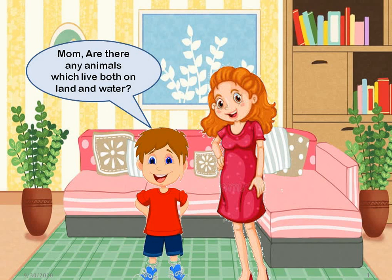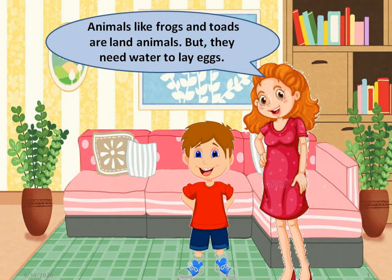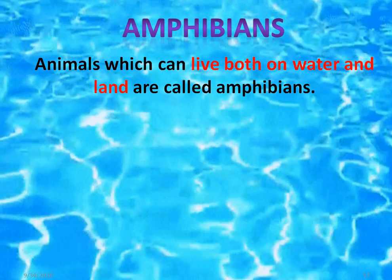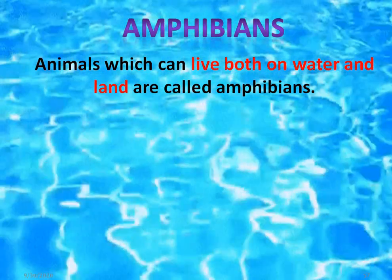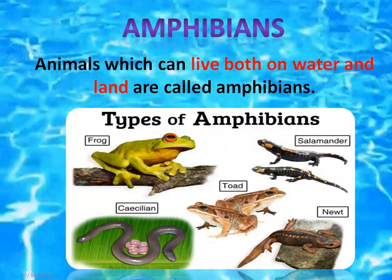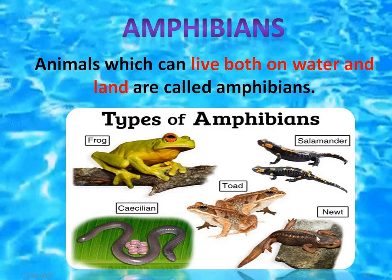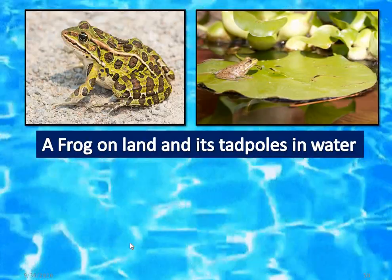Aryan says: Mom, are there any animals which live both on land and water? And mother says: Wow, very good question, son. Animals like frogs and toads are land animals, but they need water to lay eggs. So they are land animals, but when they have to lay their eggs, they go into the water. The animals which live both on water and on land are called amphibians. Some examples of amphibians are frog, toad, salamander, and newt.